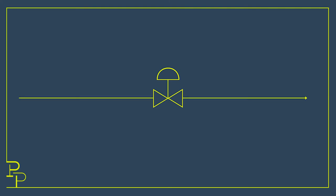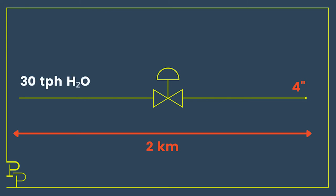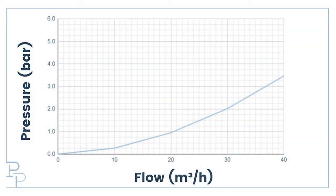Let us pretend we have a 2 km horizontal pipeline with a nominal diameter of 4 inches. My intention is to pump 30 tons — or 30 cubic meters — of regular water through this pipeline every hour. We are able to draw a system curve for this pipeline. The system curve describes how much pressure drop the water will experience when flowing through this pipe as a function of flow. If you want a higher flow rate through the pipe, you will need more pressure to push it through.